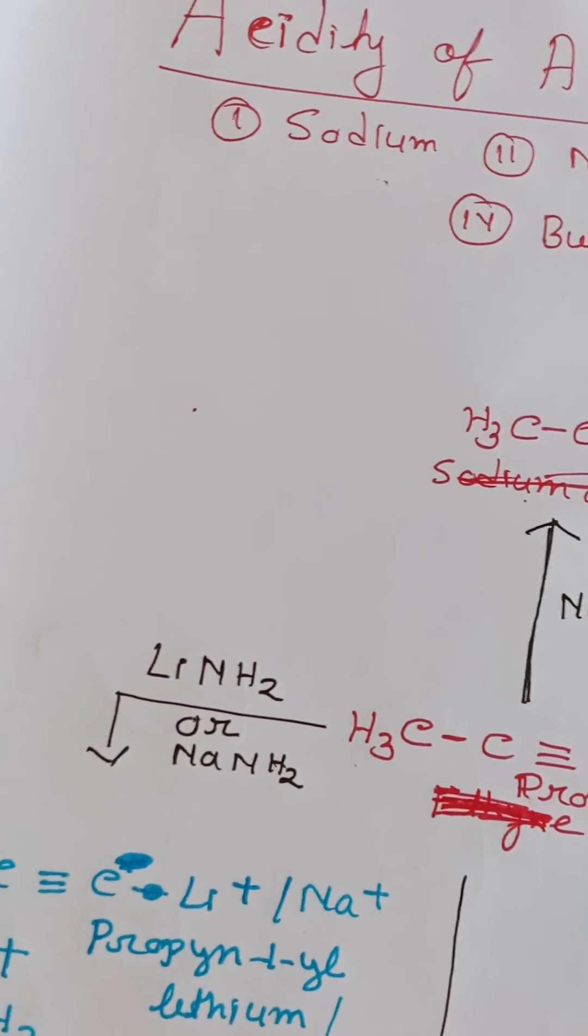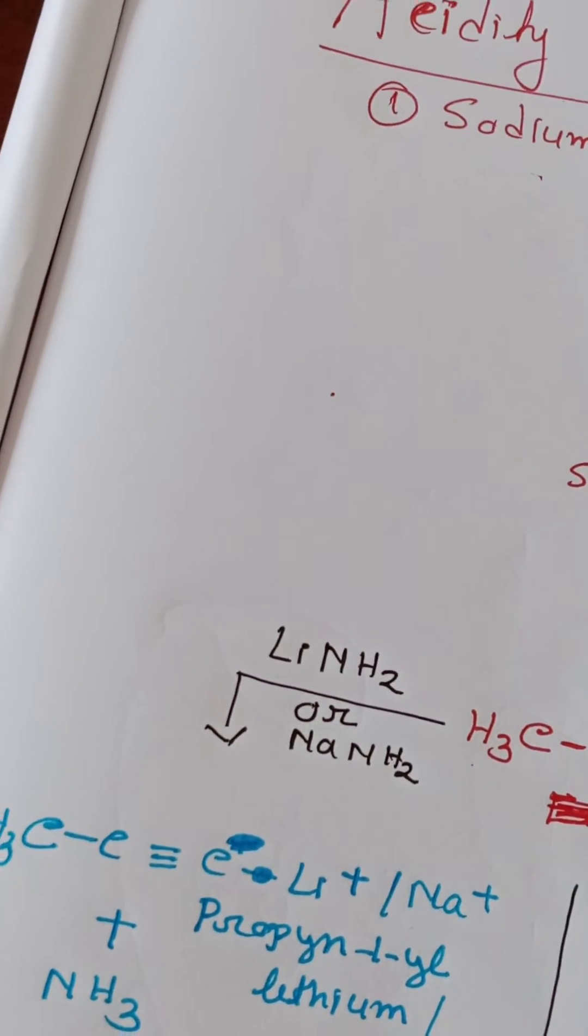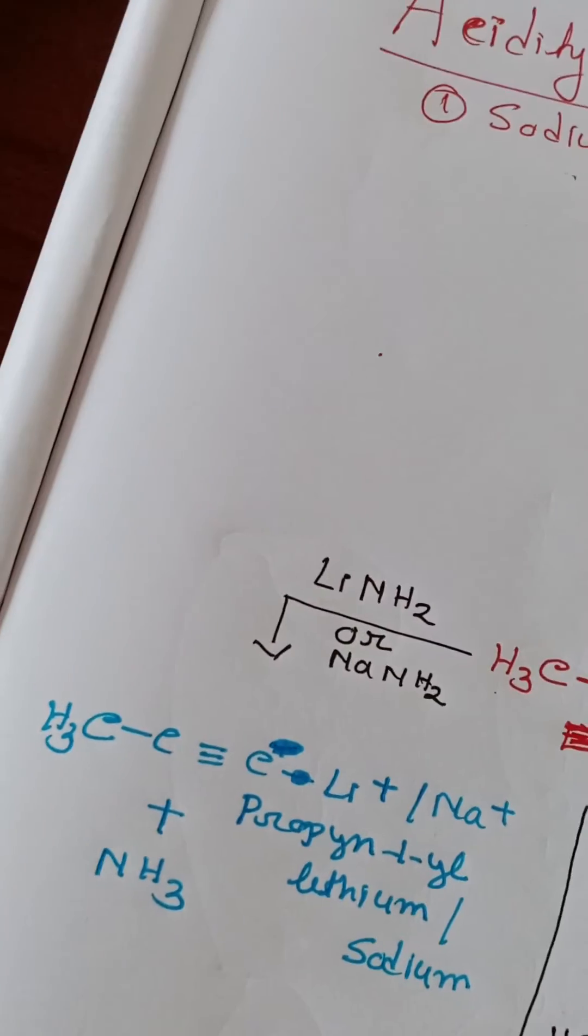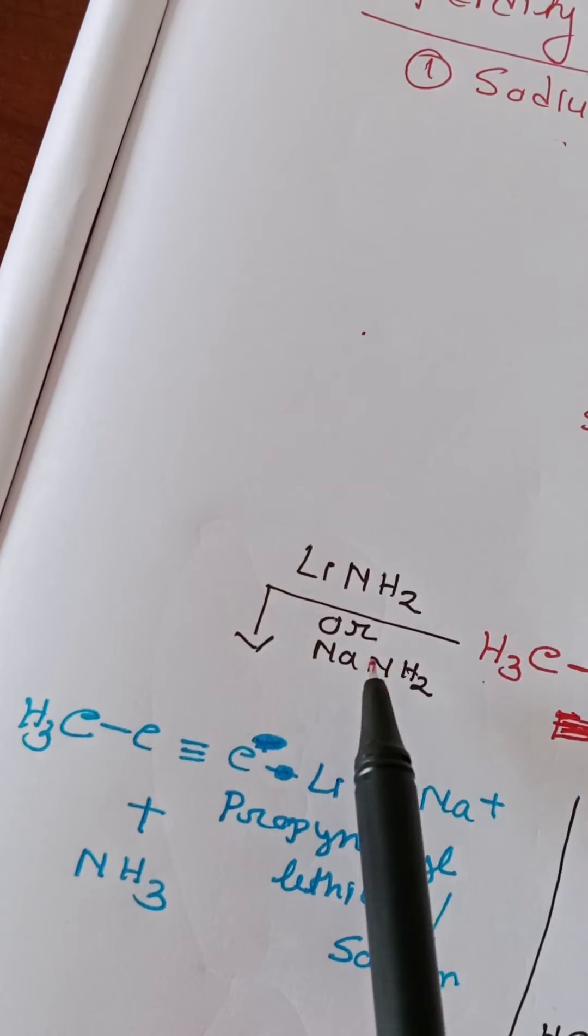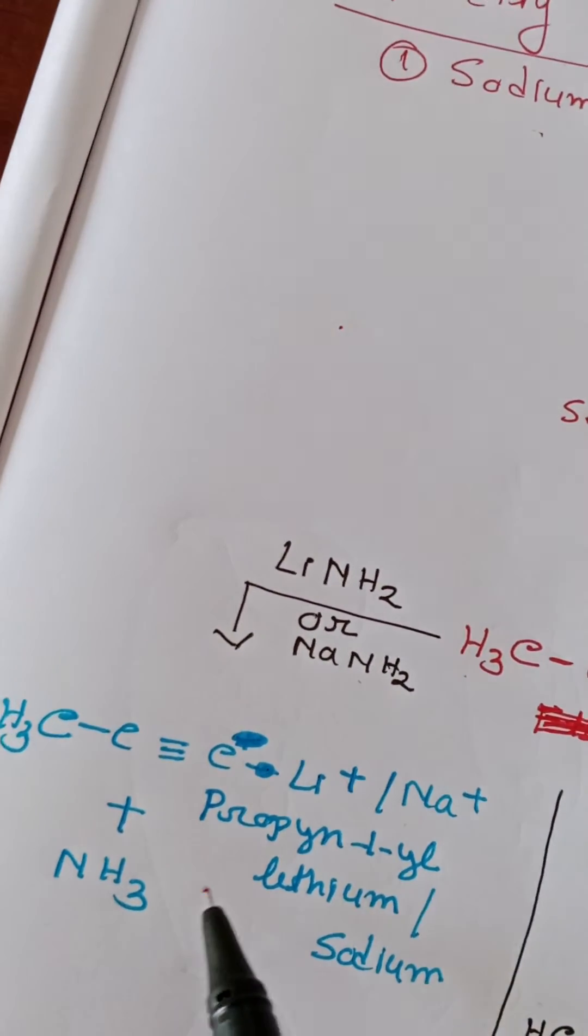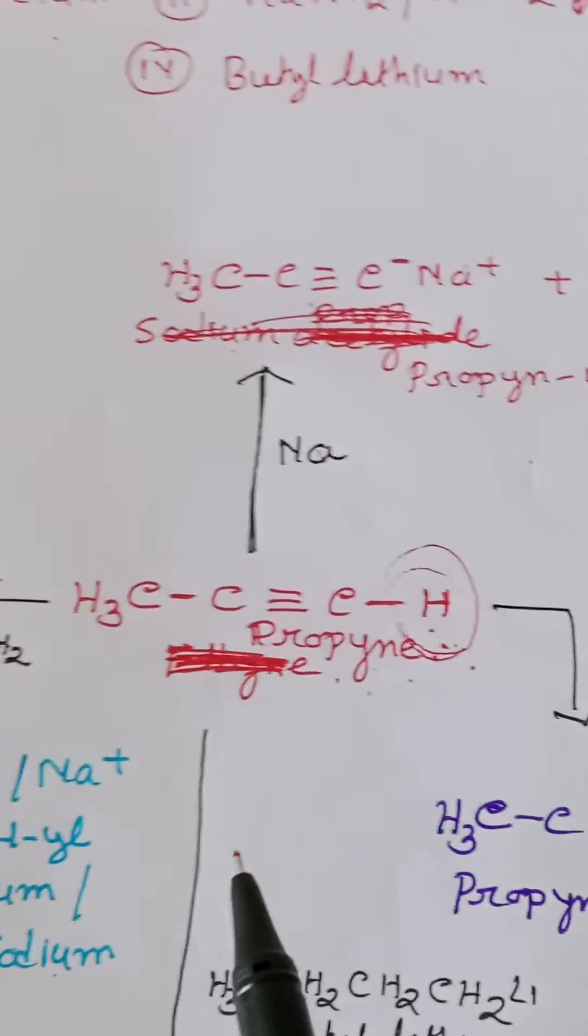Now when this propyne reacts with lithium amide or sodamide which is a very strong base, the same reaction takes place. The terminal hydrogen gets replaced by lithium plus or sodium plus. We get propyne vinyl lithium or sodium and ammonia as a byproduct.